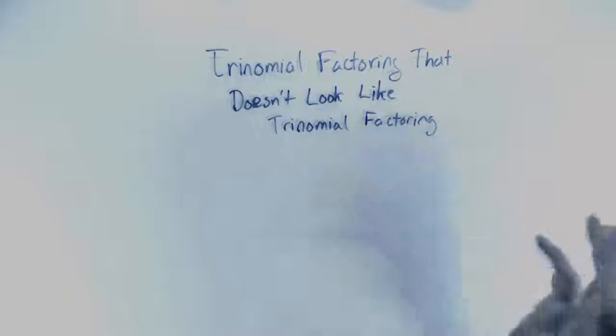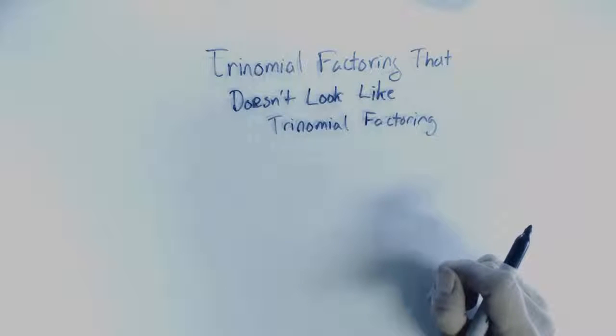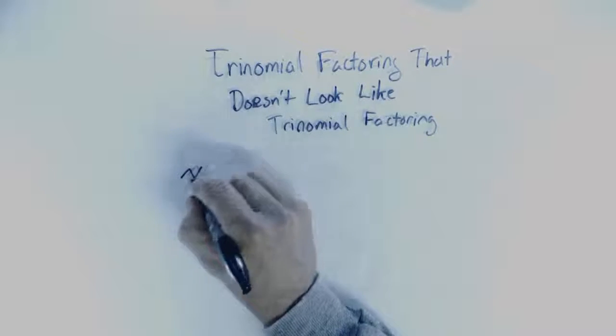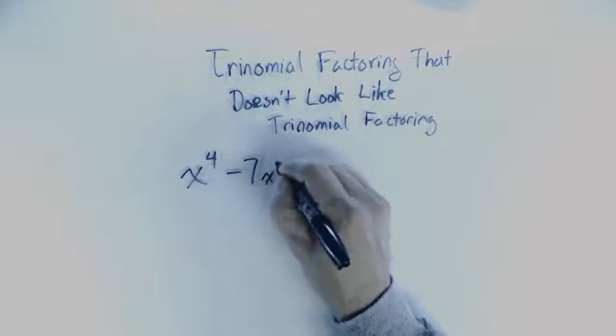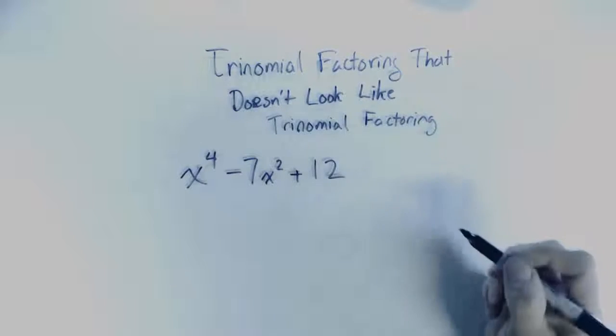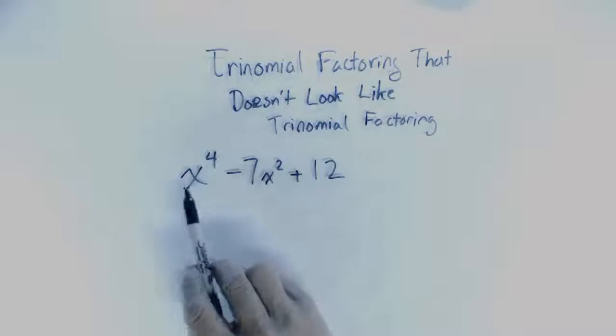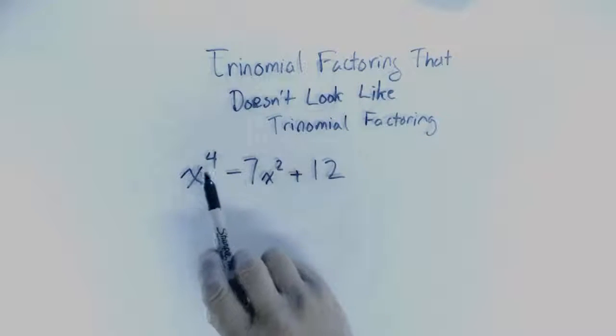So there is trinomial factoring that doesn't exactly look like trinomial factoring, but you're going to see that it really is trinomial factoring. And so here comes the expression x to the exponent 4 minus 7x squared plus 12. This will actually factor as a trinomial and it's really something squared and something, it's just that it's x squared squared.